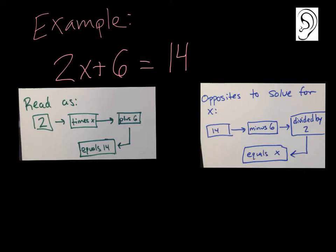We've got an example here: 2x plus 6 equals 14. This is a two-step equation. This is read as 2 times x plus 6 equals 14. We know 2x means 2 times x plus 6 equals 14. To solve these two-step equations, we're going to use OOI — opposites to solve for x. If I was solving for this, I would say 14 minus 6 (opposite of plus 6), minus 6, divided by 2 (the opposite of times 2), equals x. So I'm using my opposites to help me solve: 14 minus 6 divided by 2 would equal x.